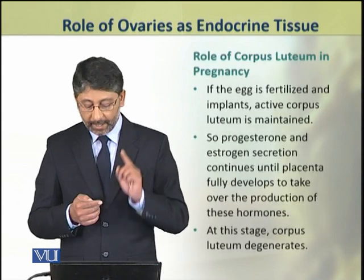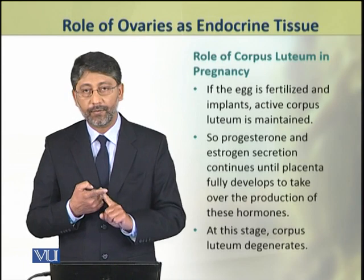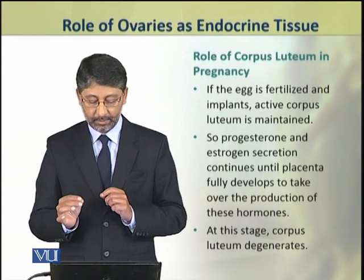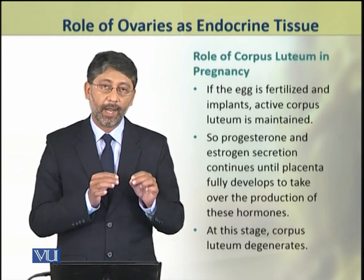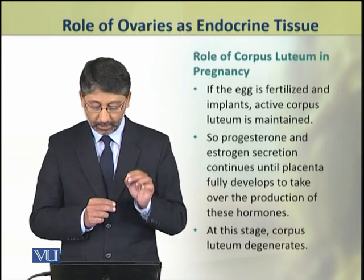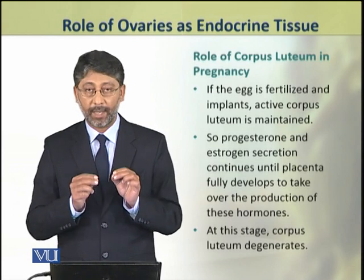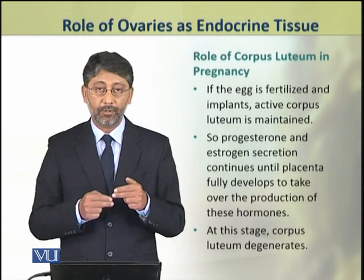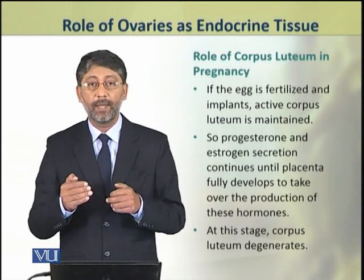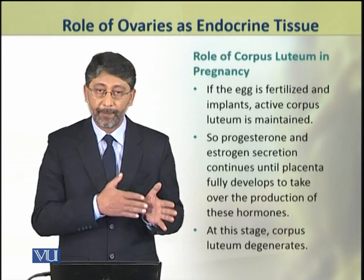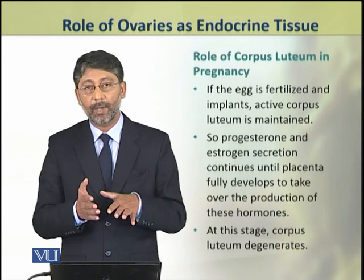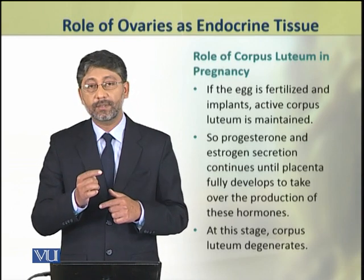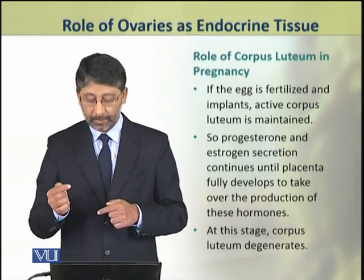However, if the egg is fertilized and implanted, an active corpus luteum is maintained, so estrogen and progesterone secretion continues. The secretion of estrogen and progesterone from the corpus luteum continues until the placenta is fully developed, after which the placenta takes full control of hormone production. At this stage, the corpus luteum degenerates.